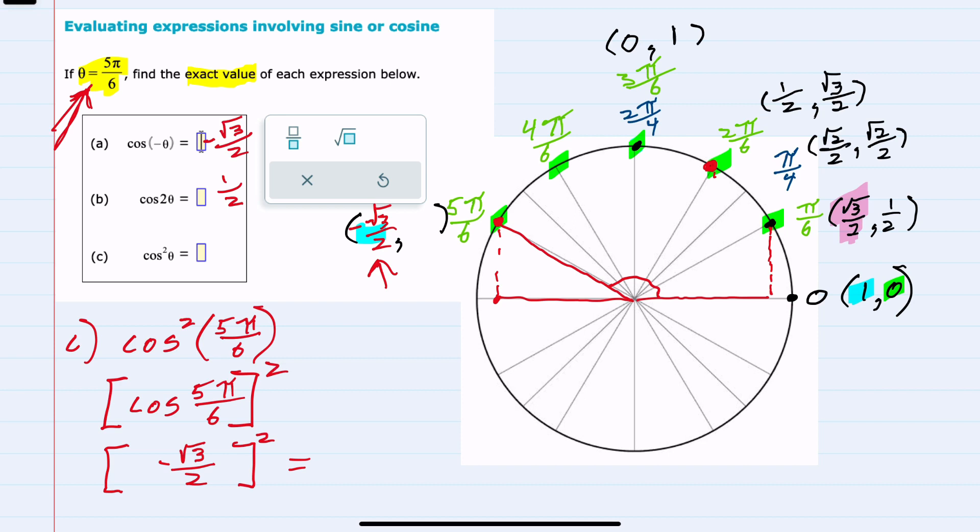Squaring the negative would become positive. Squaring the square root of 3 would give us 3. And then squaring the 2 would be 4. So our cosine squared value is 3 fourths. And we were able to find all of these by knowing and being able to generate this first quadrant, and then just mapping anything that's not in the first quadrant.